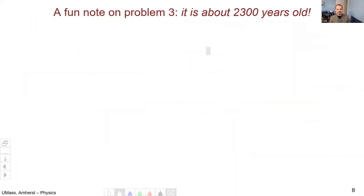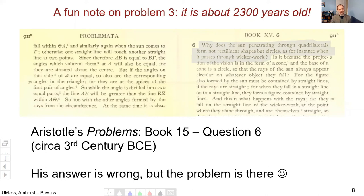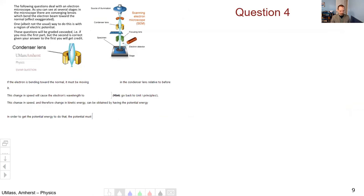A fun note about problem three is it is about 2,300 years old. Here is a page from Aristotle's Problems, book 15, question six. There's some uncertainty on exactly when this was put together, but some estimates are about third century BCE, the time of Aristotle himself. Question six is exactly why does the sun leave round images when shown through square wicker? The reason is the sun is round. I think it's kind of cool that this question is about 2,300 years old. Aristotle's answer is wrong, but the question is still there.